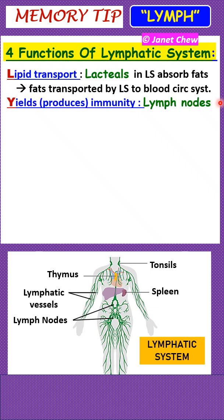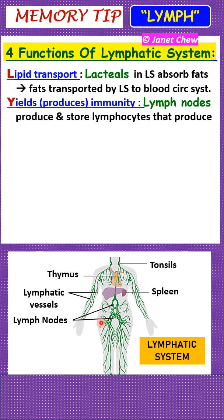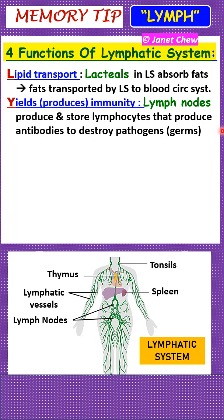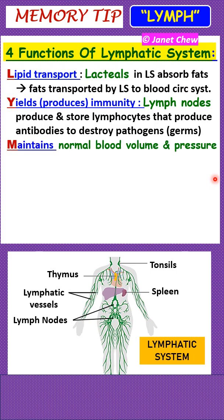Secondly, Y is for yields — the lymphatic system produces the immune response through the production of lymphocytes. Lymph nodes, which are part of the lymphatic system, produce and store lymphocytes, which are special white blood cells that produce antibodies to destroy pathogens. Pathogens are disease-causing microorganisms — the general term is germs, but please use the term pathogens. In this way, the lymphatic system produces the immune response to defend the body against pathogens.